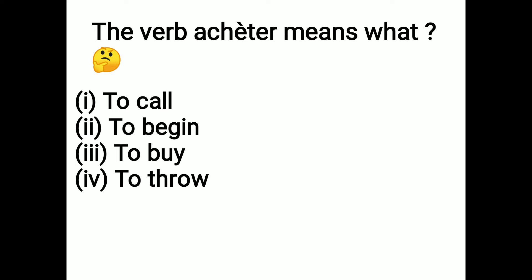Next is the love verb — acheter means what? Options are: to call, to begin, to buy, and to throw. Your 5-second time begins now. The correct answer is option C, that is to buy. Acheter ka matlab kya hota hai? Kuch khareedna. To call ko appeler se bolta hai, and to begin and to throw ko commencer and jeter bolta hai.